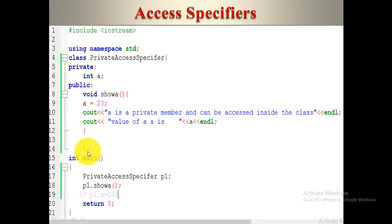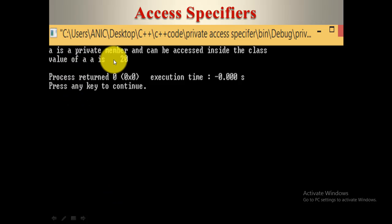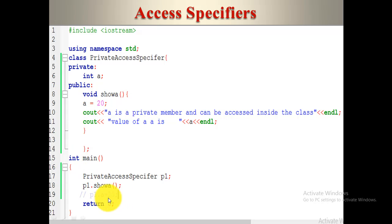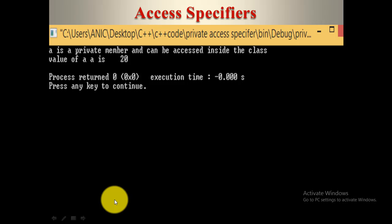The class ends, and in the main function we create the object of the private access specifier class as p1, and call p1.show. The result would be: 'A is a private data member and can be accessed inside the class,' and the value of A is 20. But what if we assign a value to A outside the class — p1.A = 20? We cannot do that, because A is a private member and we cannot access private members outside the class. It will generate an error.